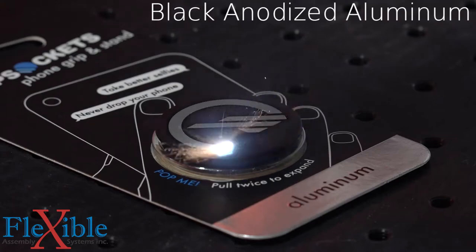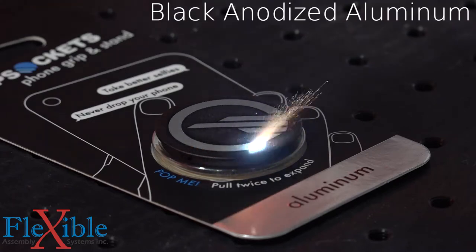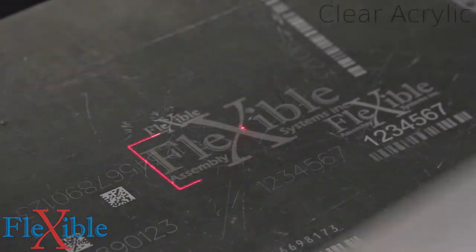Depending on which model you choose, the RX can mark an area of 60 by 60 millimeters up to 285 by 285 millimeters.